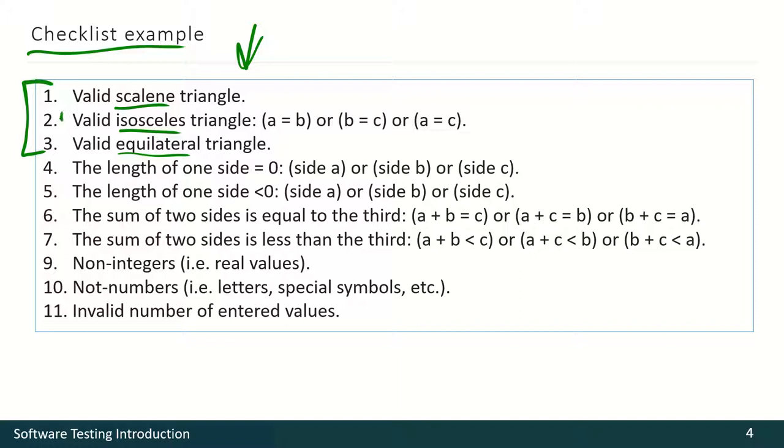Then we go to some more specific cases like one side equals zero or less than zero. Then we check if the sum of two sides equals or is less than the third. And then we go with some more specific cases like non-integers, non-numbers, invalid numbers, and so on.